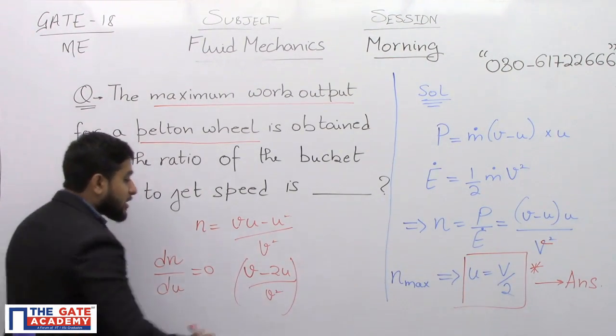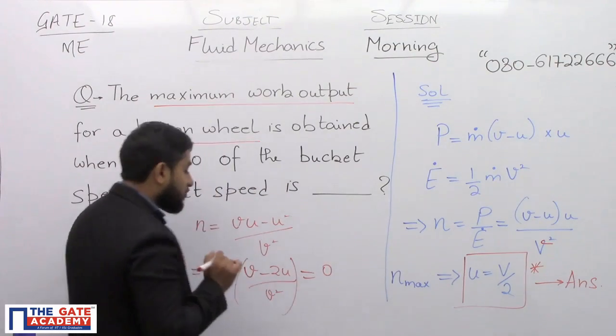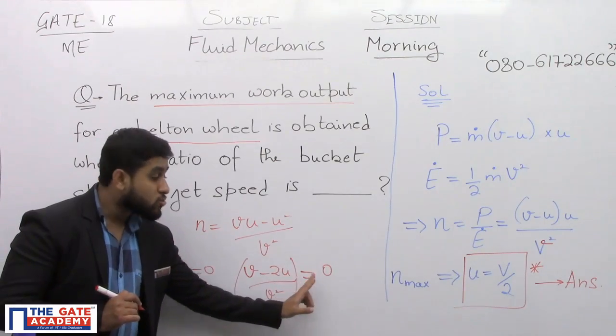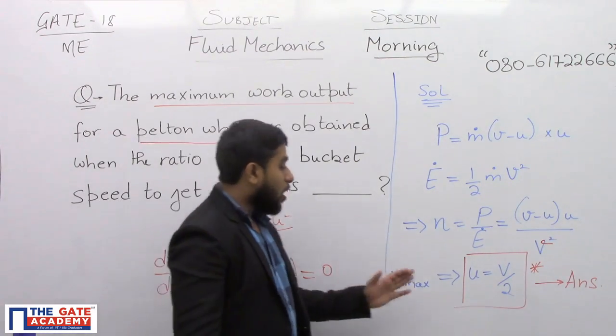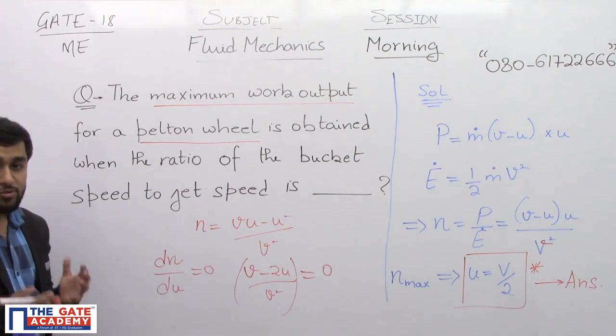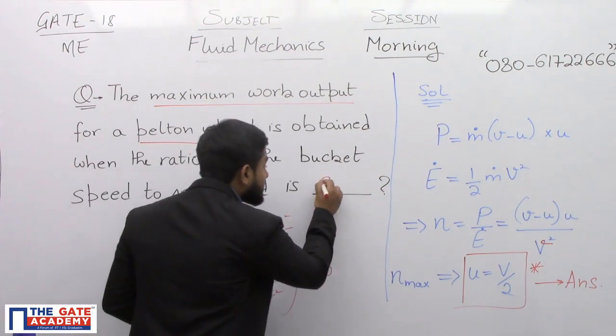For maximum eta, this differential, that is the slope of eta versus u, this has to be 0. It is only possible when v minus 2u is equal to 0, that is small u is equal to v by 2 or u by v is equal to 1 by 2. 1 by 2 is the correct answer, that is 0.5.